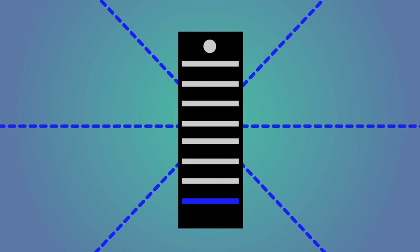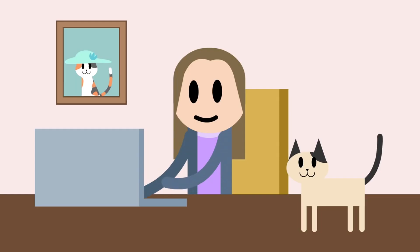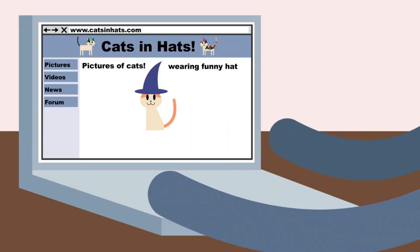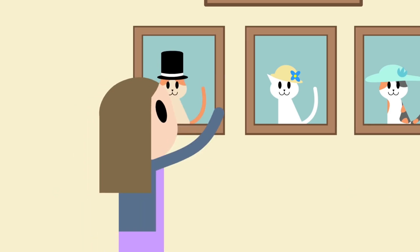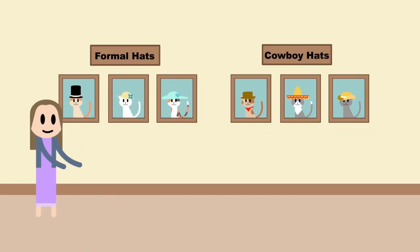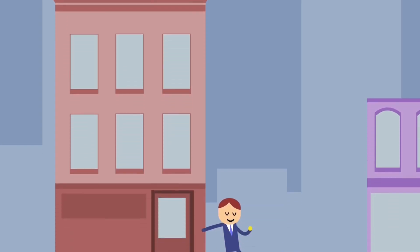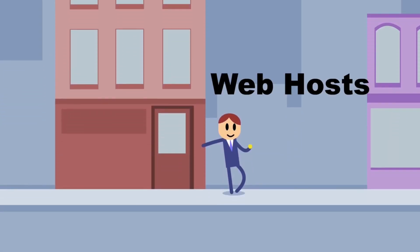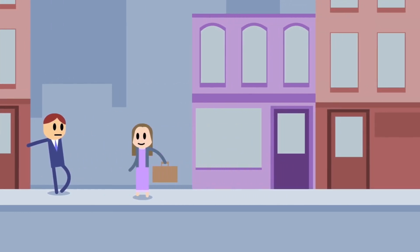Think of the web as a bunch of skyscrapers, each representing a web server — a computer always connected to the Internet, specifically designed to store information and share it. When someone starts a website, they are renting a room in this skyscraper, filling it with information and linking that information together in an organized way for others to access. The people who own these skyscrapers and rent space in them are called web hosts, but anyone can set up a web server with the right equipment and a bit of know-how.